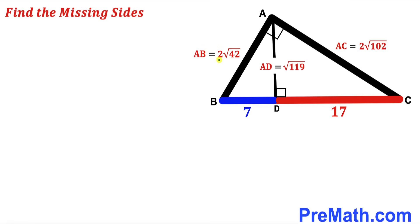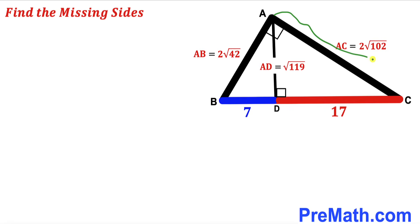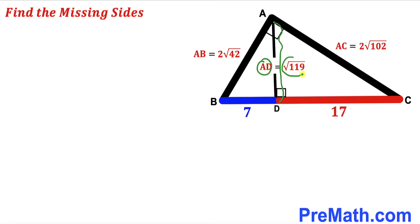After all calculations and substitutions: side AB = 2√42, side AC = 2√102, and height AD = √119. Thanks for watching and please don't forget to subscribe to my channel for more exciting videos.